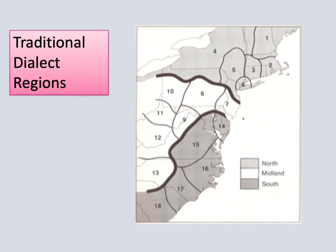Linguists began looking into this question of dialect differences in terms of regions in the middle of the 20th century, and one of the earliest products of this was the kind of map that you see here. Research by people like Hans Kurath presented the idea that American English can be divided into three main dialect regions: the North, the Midland, and the South, and you can see where those dividing lines are on the East Coast.